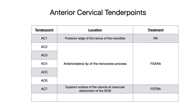Anterior cervical tender point number 7 is located on the superior surface of the clavicle, at the clavicular attachment of the sternocleidomastoid. The treatment for AC7 in counter strain is F-STRAW: flexion, side bending towards, rotation away.